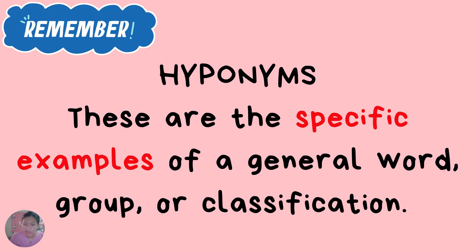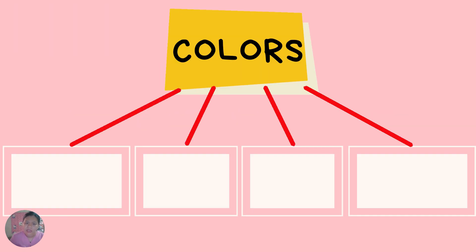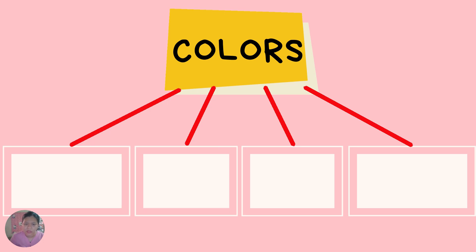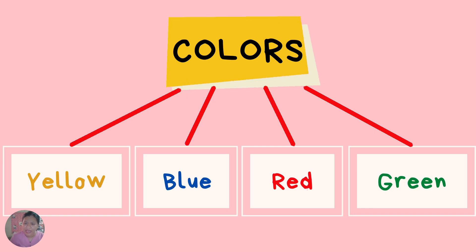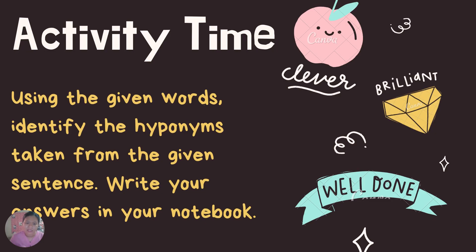Remember, children: hyponyms are the specific examples of a general word group or classification. Another example — for colors, what are the hyponyms? We have yellow, blue, red, and green. Now let us try this.